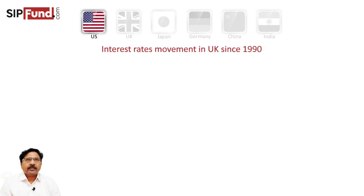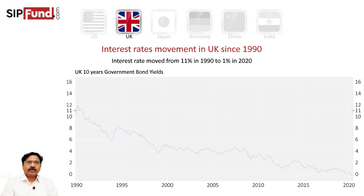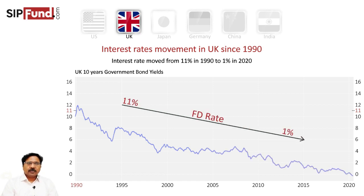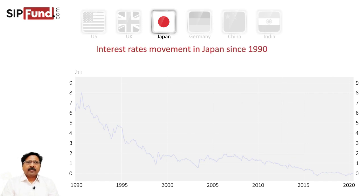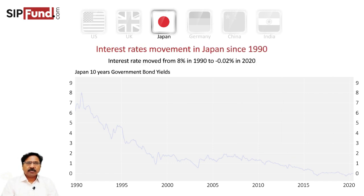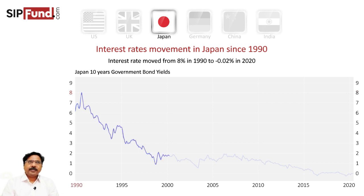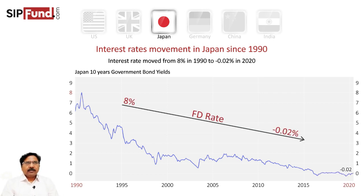We can look at the UK. Again, the UK was offering a pound interest rate of 11% in 1990, and now it is less than 1% — almost a change of 10% in the last 30 years. You can look at another country, Japan, which is very typical because currently it is hovering around sub-zero level. The interest rates are sub-zero. It has seen a high of 8% just after 1990 and has touched 0.02% in 2020 — a negative interest rate regime.